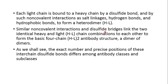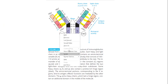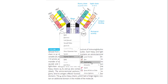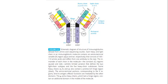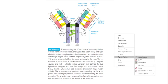Similar non-covalent interactions and disulfide bridges link two identical heavy-light chain combinations to each other in the form of a four-chain (HL)₂ antibody structure — a dimer of dimers. This heavy chain-light chain dimer is again linked by disulfide bonds as well as non-covalent interactions, so the antibody molecule can be called a dimer of dimers.